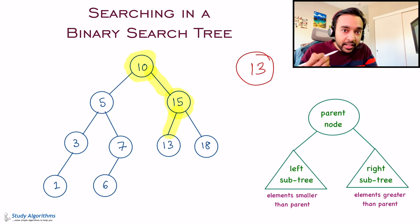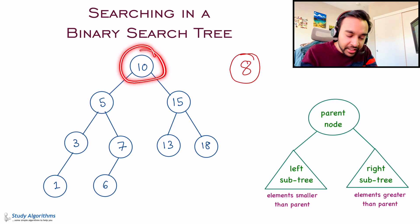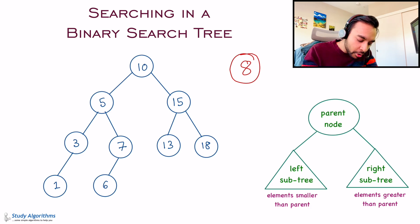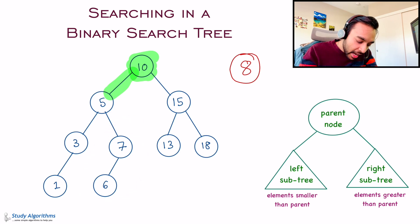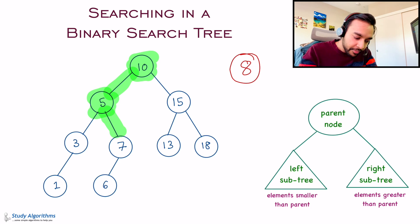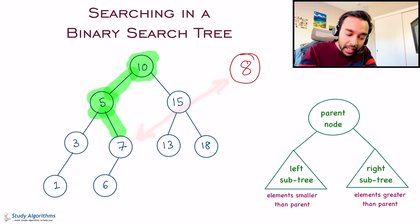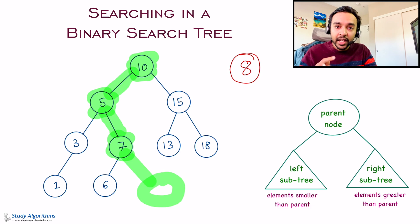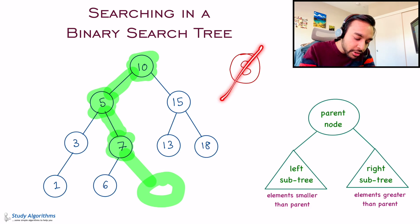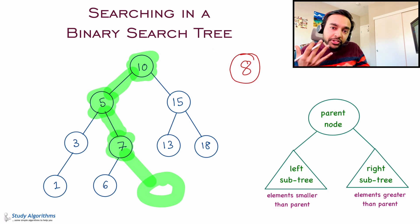Let us try to look for an element that is not present — element 8. Start with root 10: 10 is greater than 8, so look in the left subtree. Compare 5 and 8: 8 is larger, so move to the right subtree. Compare 7 and 8: 8 is larger, so look in the right subtree of 7. I encounter a null. That means 8 was not present in the binary search tree. You can see how searching became so fast.